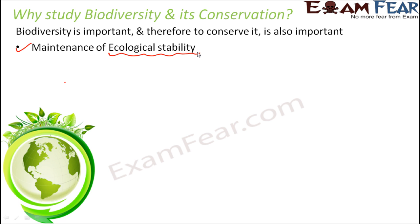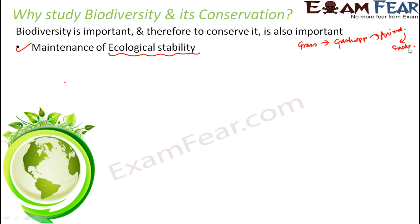Let me give you a small example. Consider a food chain taking place in the ecosystem: grass is eaten by a grasshopper, the grasshopper is eaten by a bigger animal — maybe a frog — and then that frog is eaten by a snake. This is a food chain.